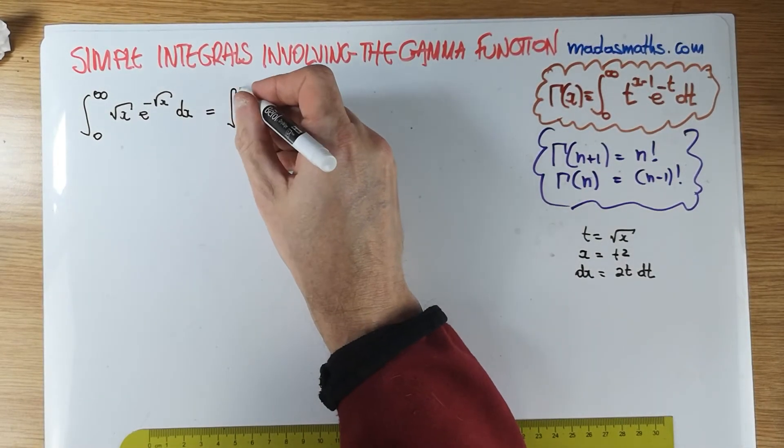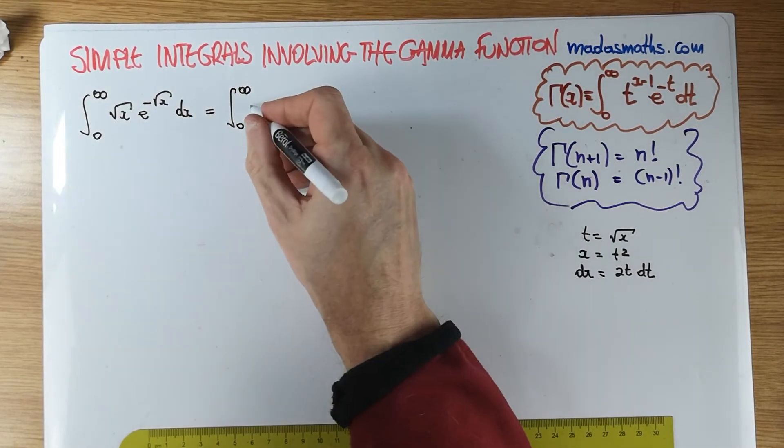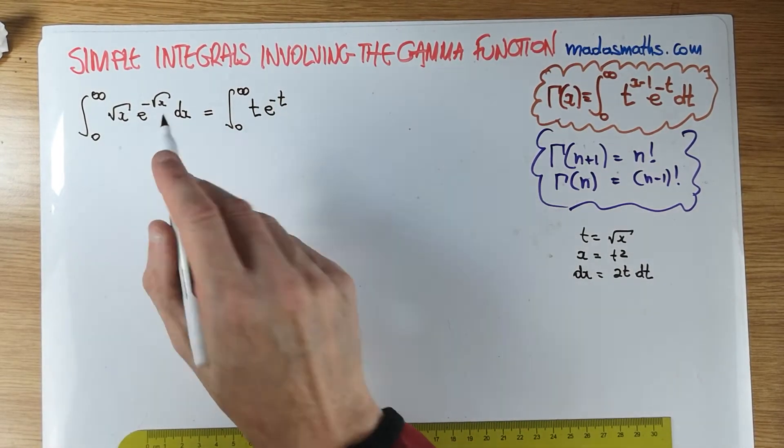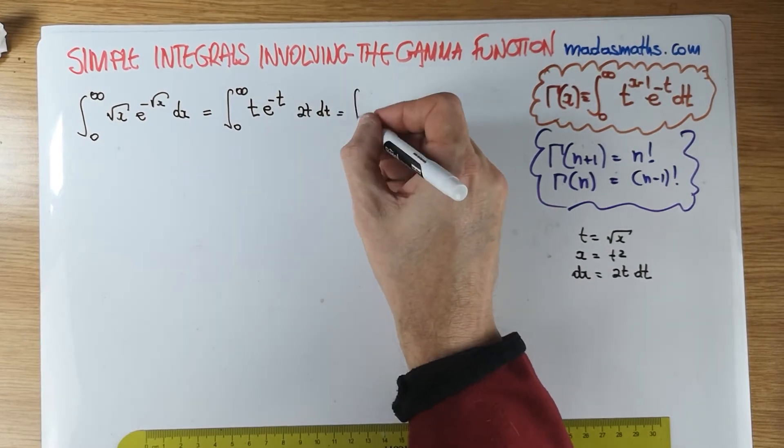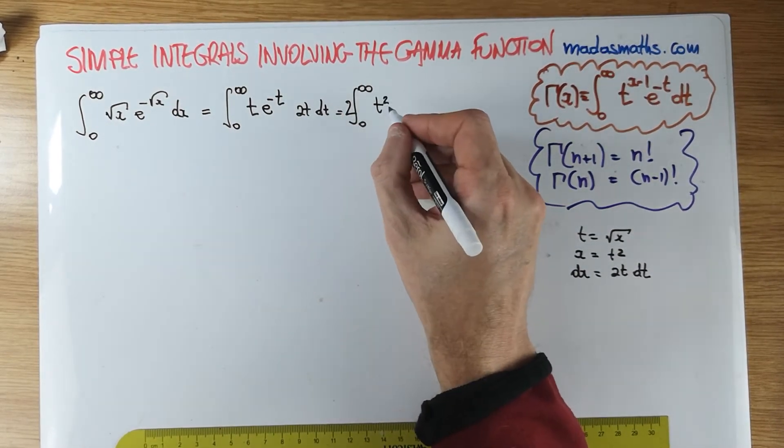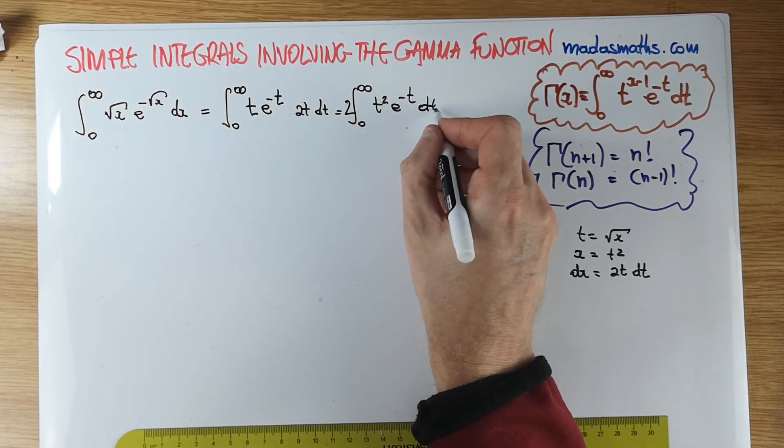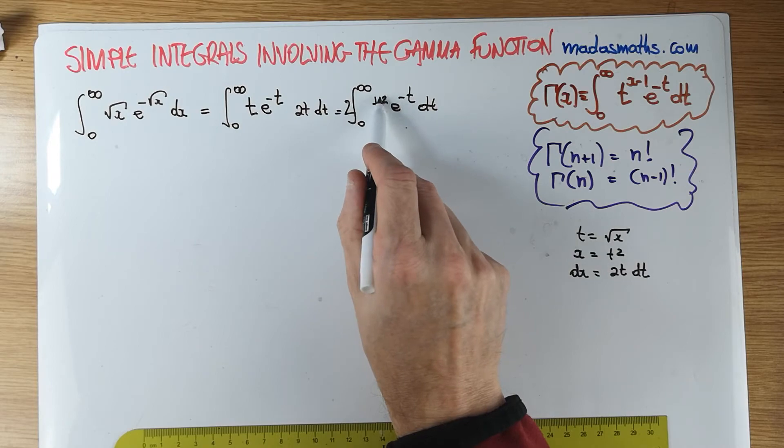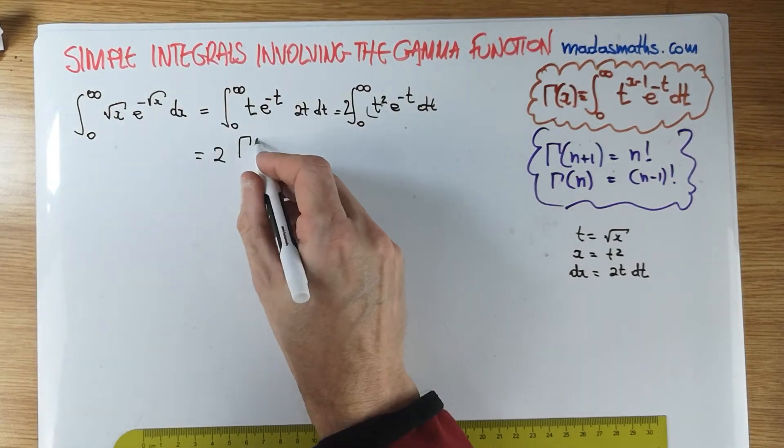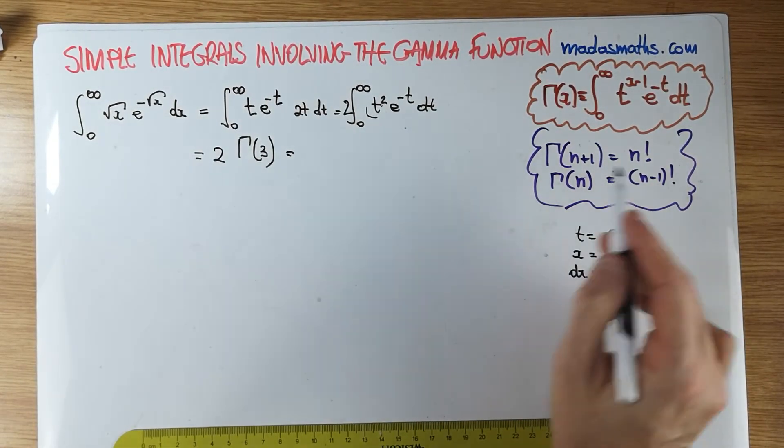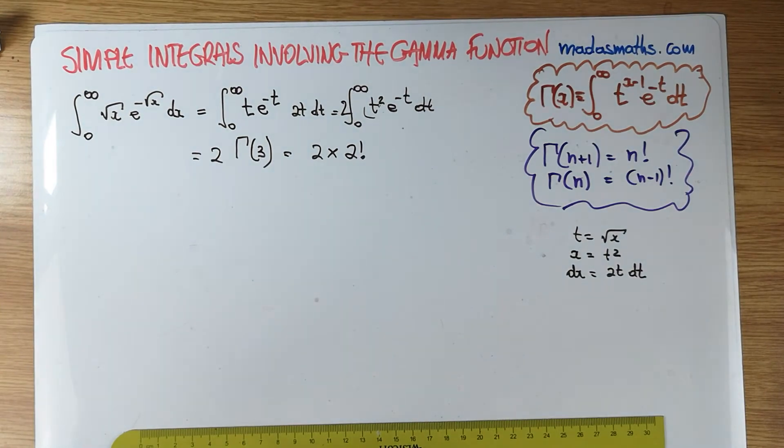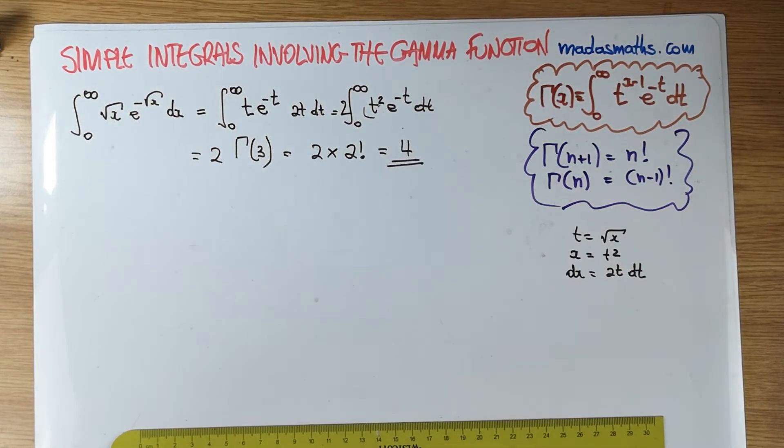So this now will be 0 to infinity. Square root of x is, in fact, t e to the minus t and my dx turned out to be 2t dt. And I think that's nice and straightforward. Let's move that 2 at the front. From there, we're gonna have a t squared e to the minus t dt. And this is a gamma function with one more than what we got in there. So that is, in fact, 2 lots of the gamma of 3. And using this result here, this is 2 times the gamma of 3 is the same as 2 factorial. 2 factorial is, of course, a 2. And therefore, this will be equal to 4. And that's done.